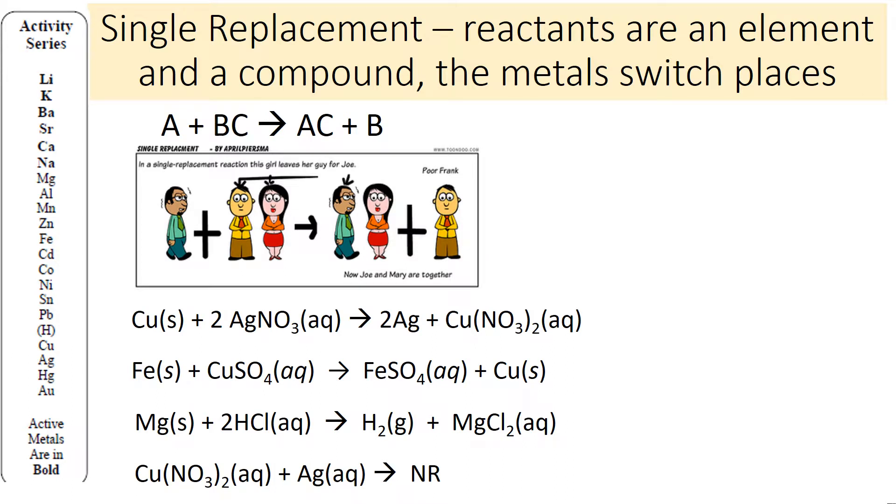Single replacement is where reactants are an element and a compound, and the metal switches places. It could also be the non-metal, but we're going to consider cases where the metal switches places. So you have A, a metal by itself, plus BC, a metal in a compound. What happens is A and B switch places so that A is now in the compound and B is by itself. That's how a single replacement reaction works.